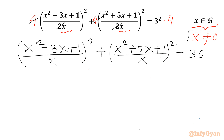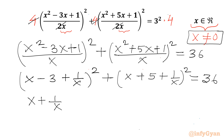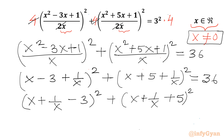As x cannot be equal to 0, I can divide. Let me divide our numerator by x: (x - 3 + 1/x)² + (x + 5 + 1/x)² = 36. After rearranging the terms: (x + 1/x - 3)² + (x + 1/x + 5)² = 36.